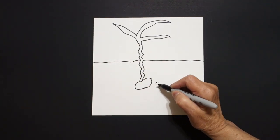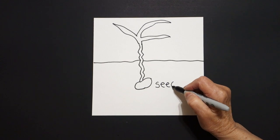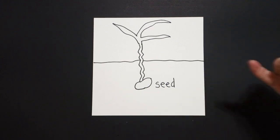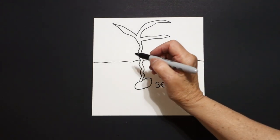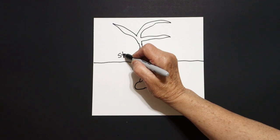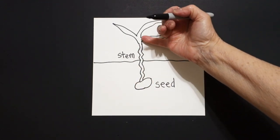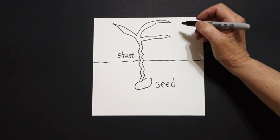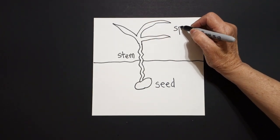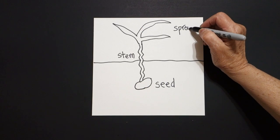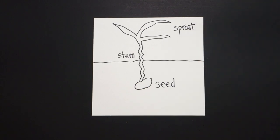This is a seed. And once the seed starts growing, it becomes a stem. And once the stem starts really growing, it becomes a sprout, which is the beginning part of a plant.